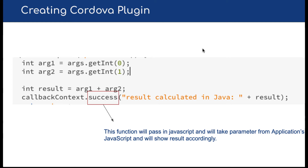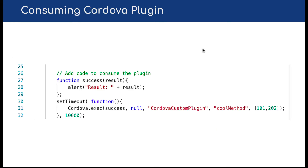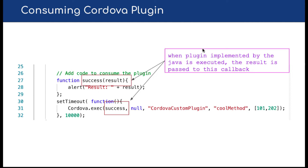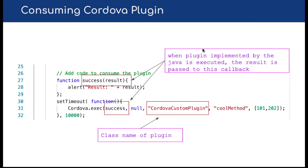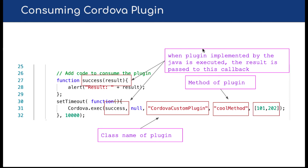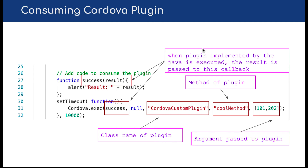This is the function that we will inject into our application's JavaScript code, where we pass two parameters. The success result callback is triggered when the plugin implemented in Java is executed and the result is passed back. 'CordovaCustomPlugin' is our plugin's class name, this is the method name we will use — 'cool method' — and parameter one and parameter two are the arguments passed to the plugin.